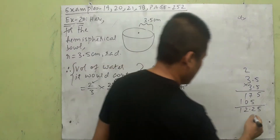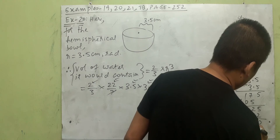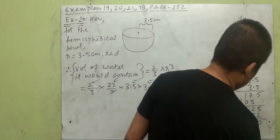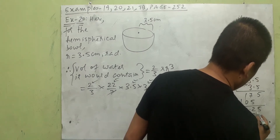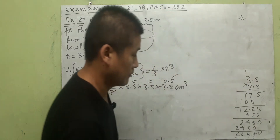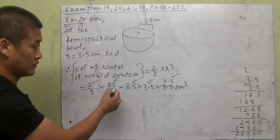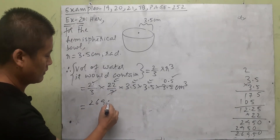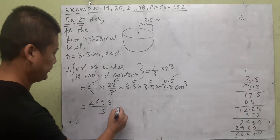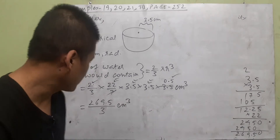Multiplying 12.25 by 3.5 (and continuing the simplification), the numerator evaluates to 269.5. So the volume is 269.5 divided by 3 centimeter cube.